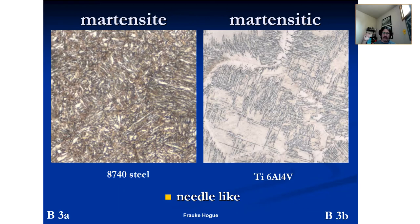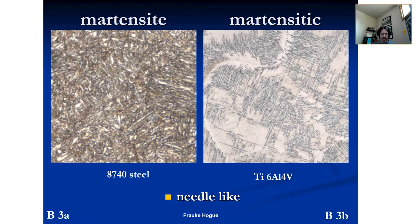We have martensite seen in steel — this is 8740 grade steel — and we have martensitic-like microstructures in Ti-6Al-4V (6-4 Ti). This is the needle-like structure. You can see the difference: alpha prime martensite versus the beta, visible just because of the morphology — this kind of needled microstructure. So it's called 'martensitic' because it looks like martensite. Martensite is always associated with that needle, elongated-like microstructure.